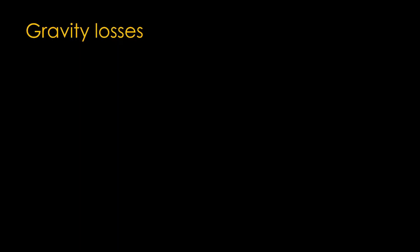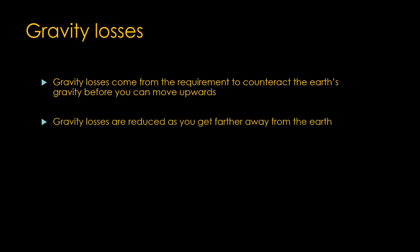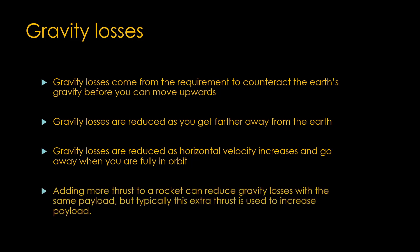That's the story on gravity losses. Gravity losses come from the requirement to counteract the Earth's gravity before you can move upwards. Gravity losses are reduced as you get farther away from the Earth. Gravity losses are reduced as horizontal velocity increases and go away when you are fully in orbit. Adding more thrust to a rocket can reduce gravity losses with the same payload, but typically this extra thrust is used to increase payload.